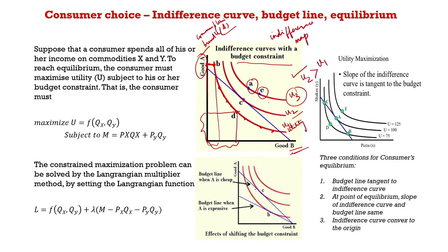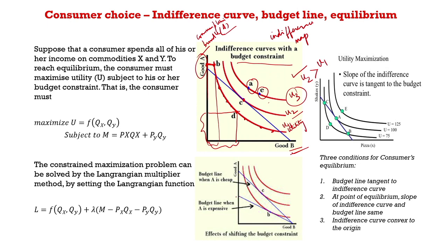Different consumers have different income levels, so the budget line can change. When A becomes more expensive, the consumer can afford less of A, and the y-intercept shifts. So we can have different budget constraints given the prices and income the consumer faces. The budget line equation M = PxQx + PyQy captures these parameters.